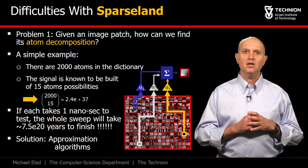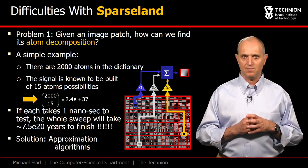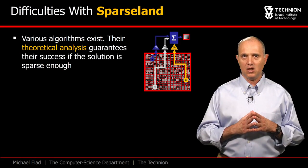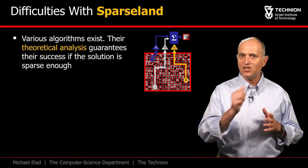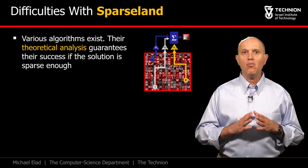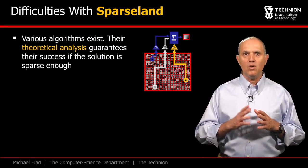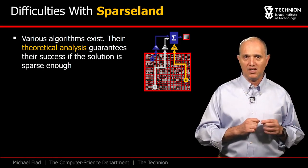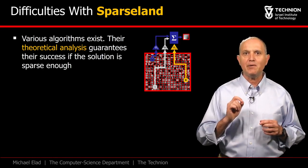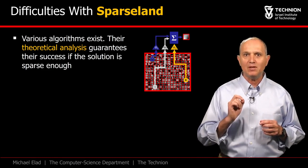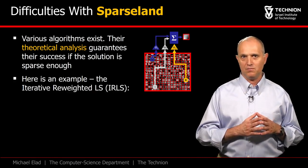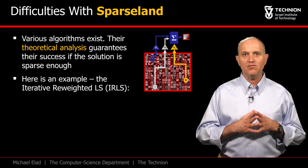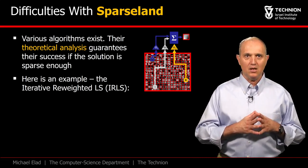The answer is using approximation algorithms. In this course, we will introduce several such algorithms that can accomplish the needed computation in a fraction of a second. However, far more exciting will be the fact that we will be able to prove that under some conditions on the number of non-zeros in alpha, these algorithms are guaranteed to find the globally optimal solution. As an example, here is how an algorithm called the Iterative Reweighted Least Squares, IRLS, would perform.